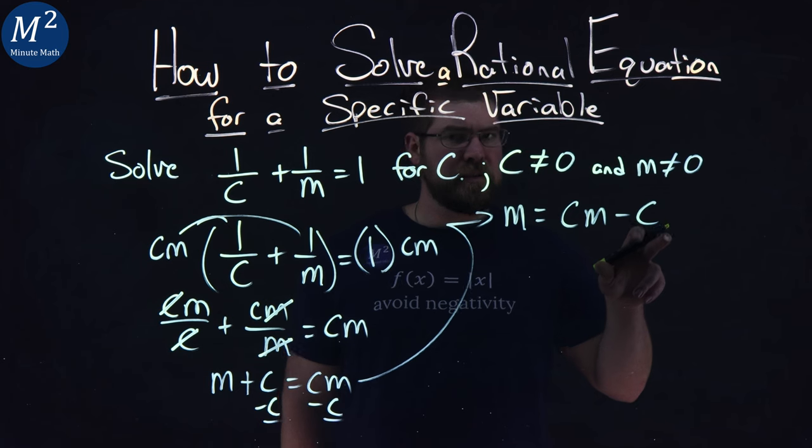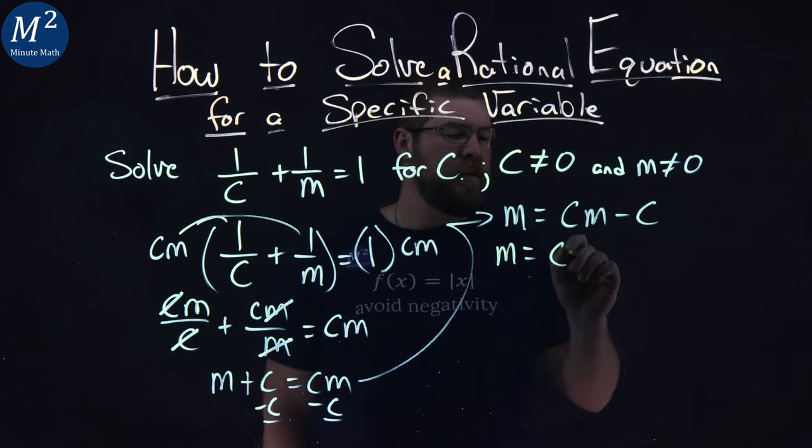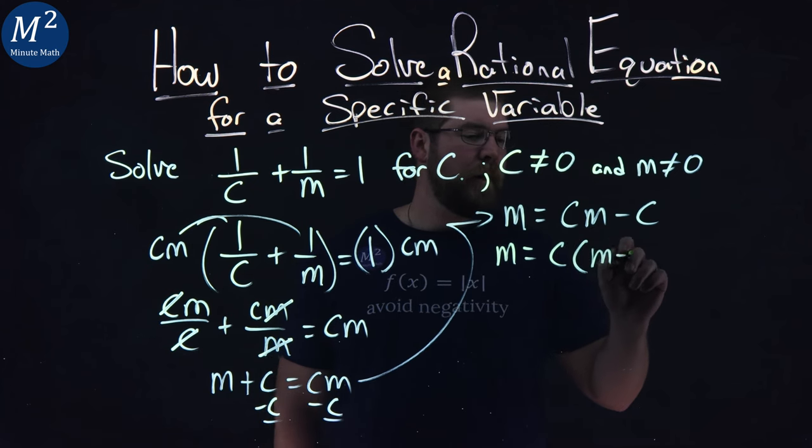But cm and c - I can pull out a c from both parts. I have m here, I have a c, and when I pull out the c from both sides, I have m - 1.